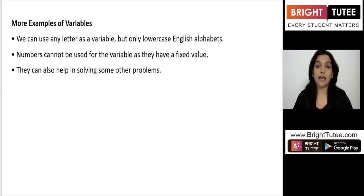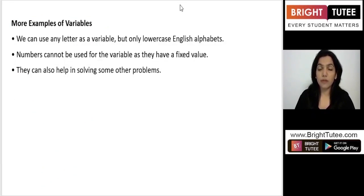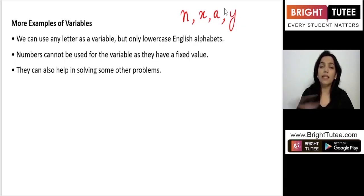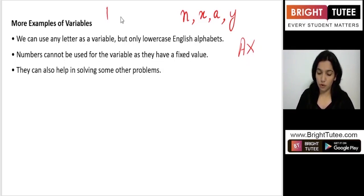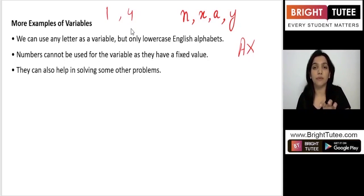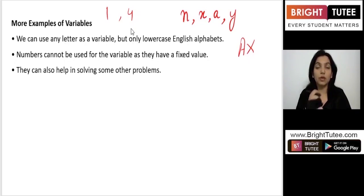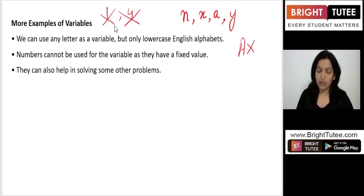We can use any letter as a variable, but only lowercase English alphabets — such as n, x, a, y, z. Capital letters cannot be used as variable names. Also, numbers cannot be used as variables because they have a fixed value. For example, 4 is always 4 items — it is fixed and can never be a variable.